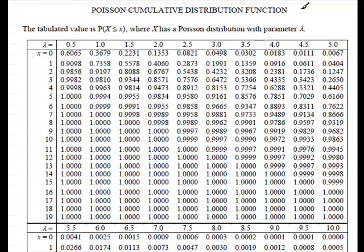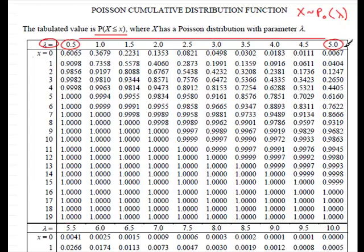In a few moments I'm going to show you how we can use the tables to calculate various probabilities, and more importantly how we can use them in the inverse sense where we're given a particular probability and we've got to work out the observed value x. Let's say this is a typical set of tables where if x follows a Poisson distribution with mean lambda, the tables work out the probability that x is less than or equal to a given observed value x. The values of lambda are normally written across the top, and in this particular set of tables lambda goes from 0.5 all the way up to 5.